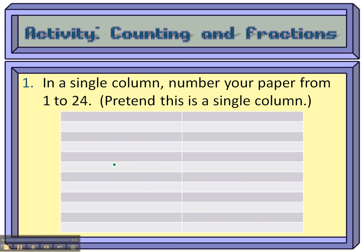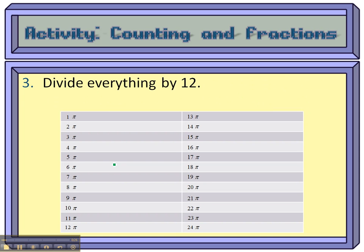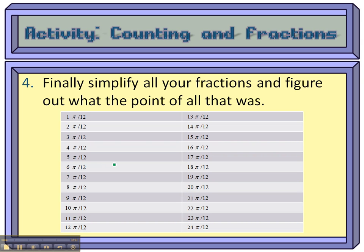So, what I'm going to have you do is number your paper 1 through 24, like you see, and then you tag a π to the end of each number, and then you divide everything by 12 and you reduce where you can.